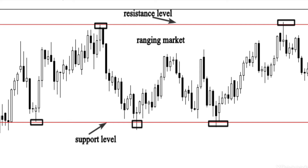The second way to trade a ranging market is by waiting for a breakout from either the support level or the resistance level. When the market is ranging, no one knows what is going to happen — we don't know who is going to be in control of the market. This is why you have to pay attention to the boundaries, which are the red lines you see on the chart.